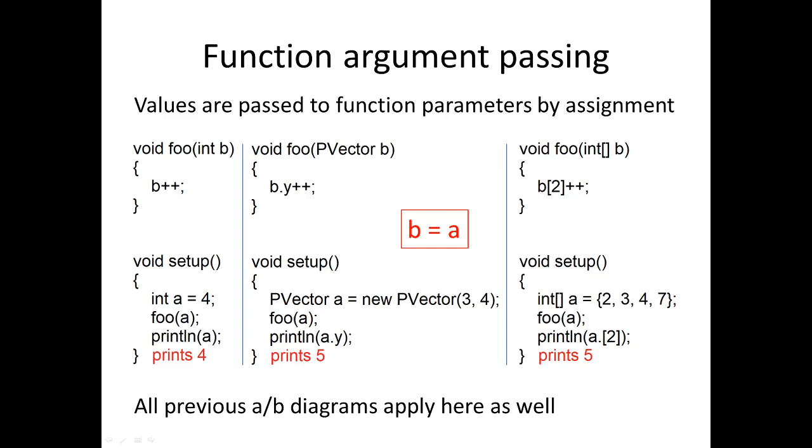We're just doing the same assignment that we've seen in the previous examples. In the first case when b is an integer, the b++ has no effect on a. But then when b is a PVector or the array, just like we saw before, a and b point to the same thing in memory - either the same PVector or the same array. So in the second and third cases we do in fact see a change in a, and we get a 5 printed out instead of a 4. All the memory diagrams we saw before apply exactly here.